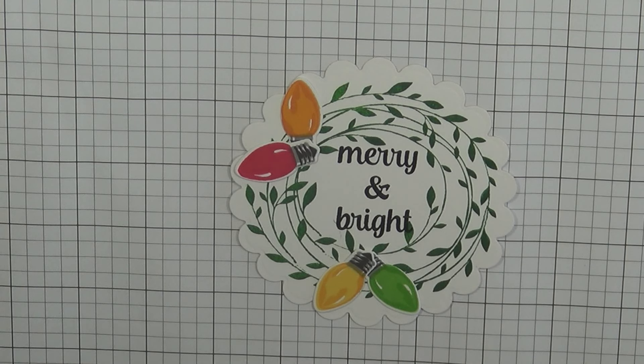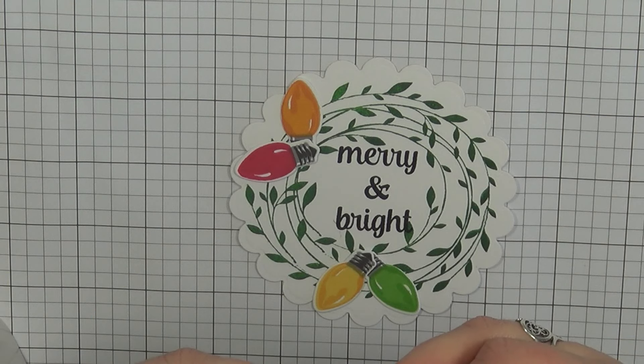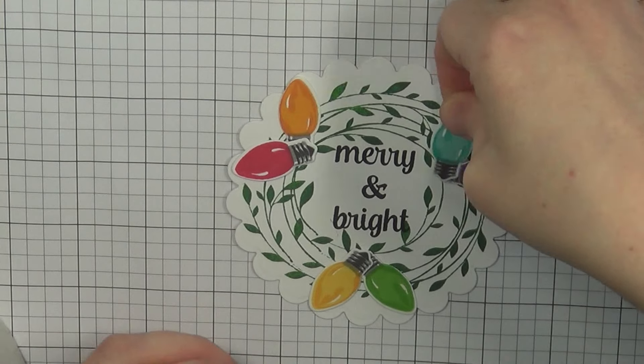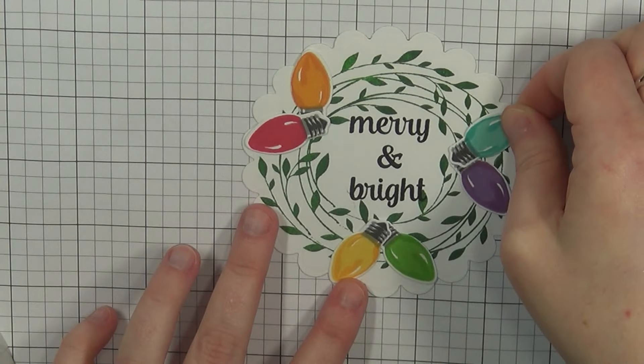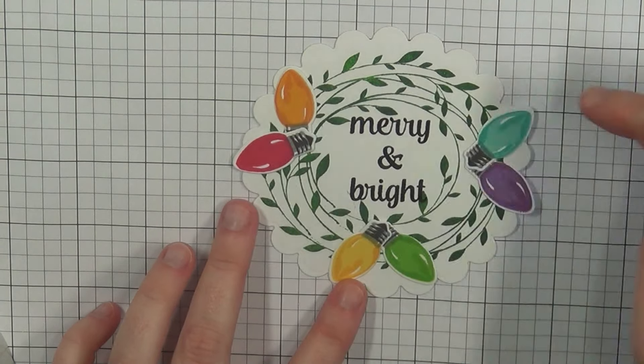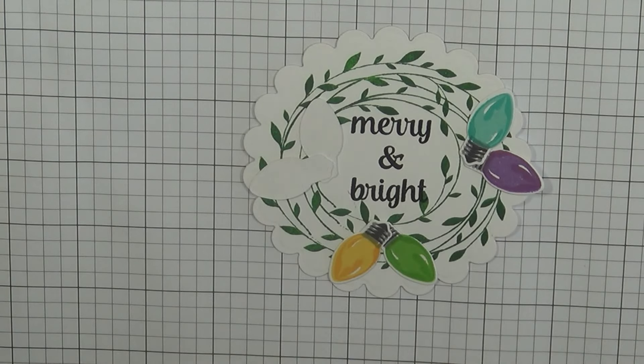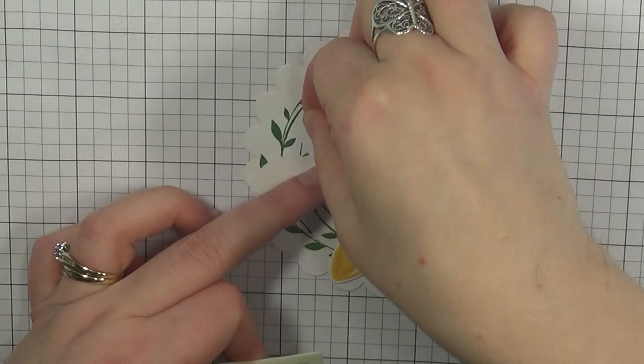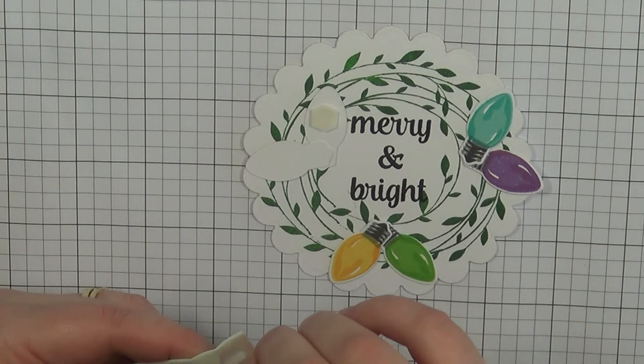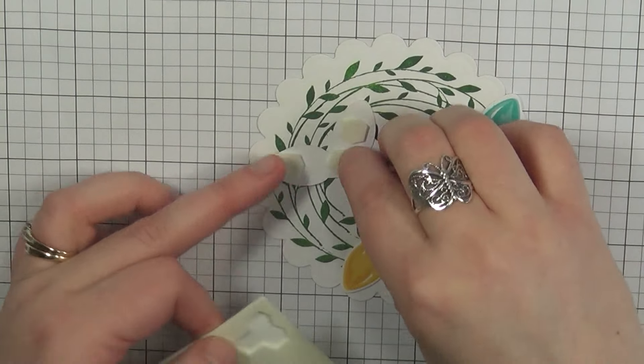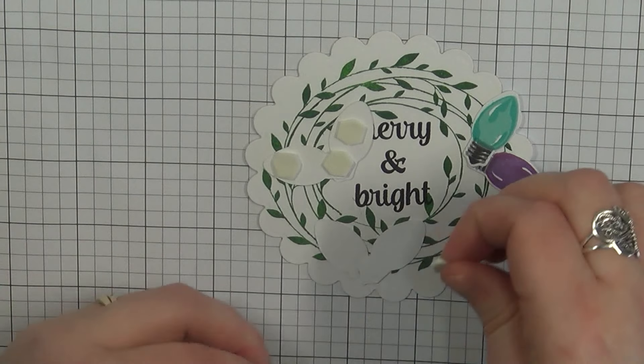So now I'm going to go ahead and assemble some of my lights here and you see I've decided on joining the two bulbs together. I thought this would be a really fun design to do like this and I've just taken some really small glue dots and I've adhered them together and now I'm going to want to pop this up. So I've got some of these foam dots here. These are from Stampin' Up. These have been in my stash forever and a day it seems.